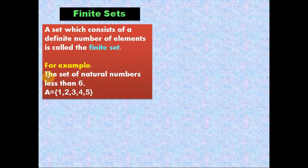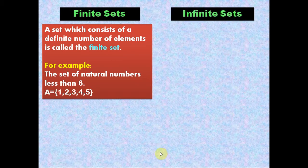For example, the set of natural numbers less than 6. Here we have a set A which has natural numbers less than 6: 1, 2, 3, 4, and 5. These are the elements which are less than 6 and it is a definite number of elements, so this set is known as a finite set.